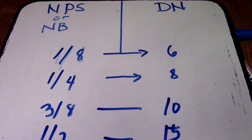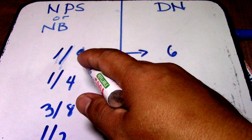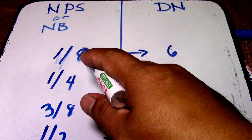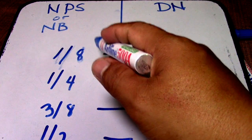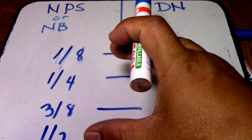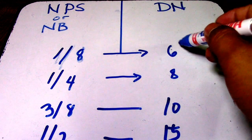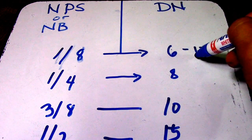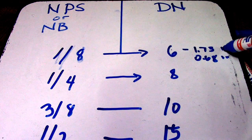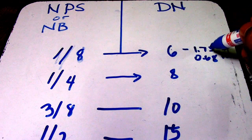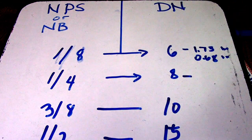Each nominal size also has an outside diameter, inside diameter, and schedule. For NPS 1/8: schedule 5 gives a wall thickness of 1.24 mm; schedule 10 gives 0.049 inches. The standard schedule 40 for DN6 (NPS 1/8) gives a wall thickness of 1.73 mm or 0.0628 inches.